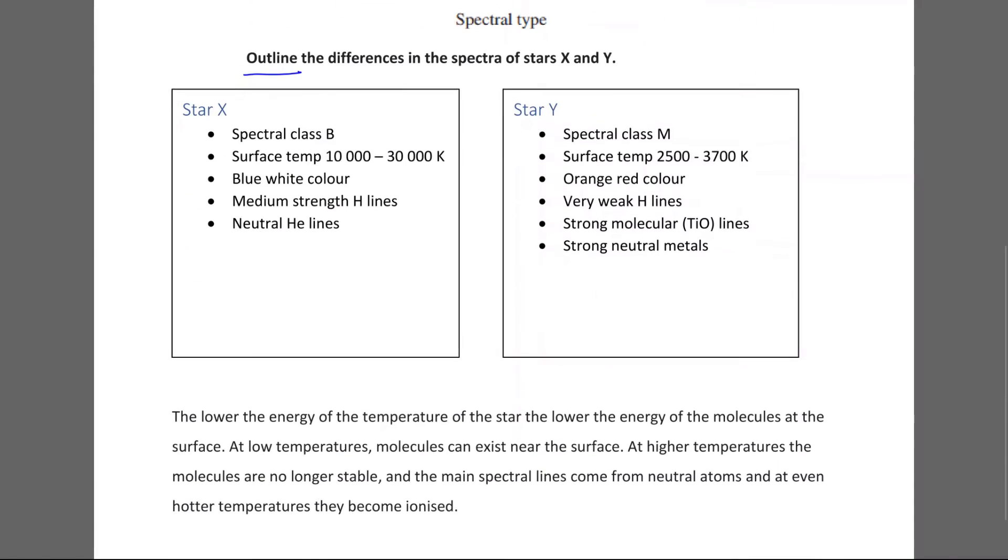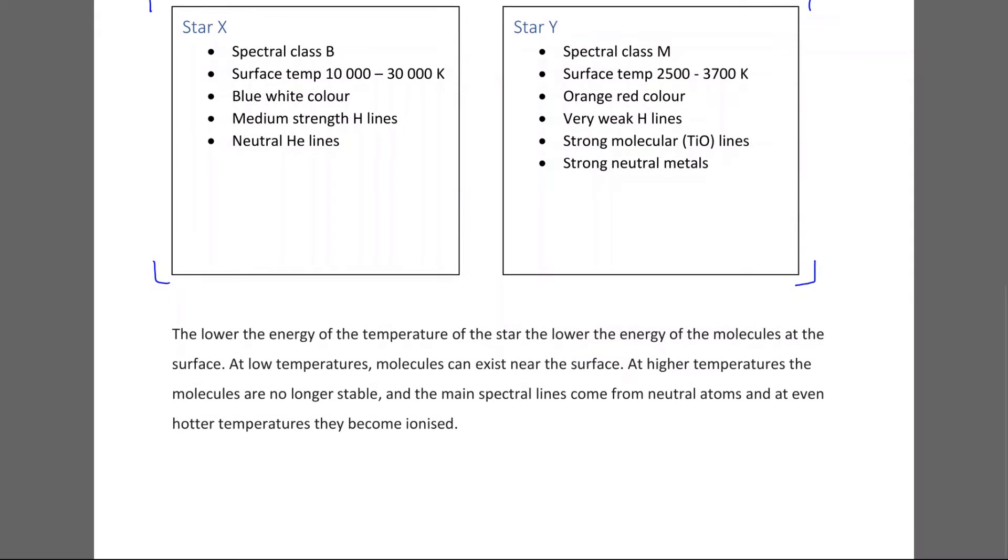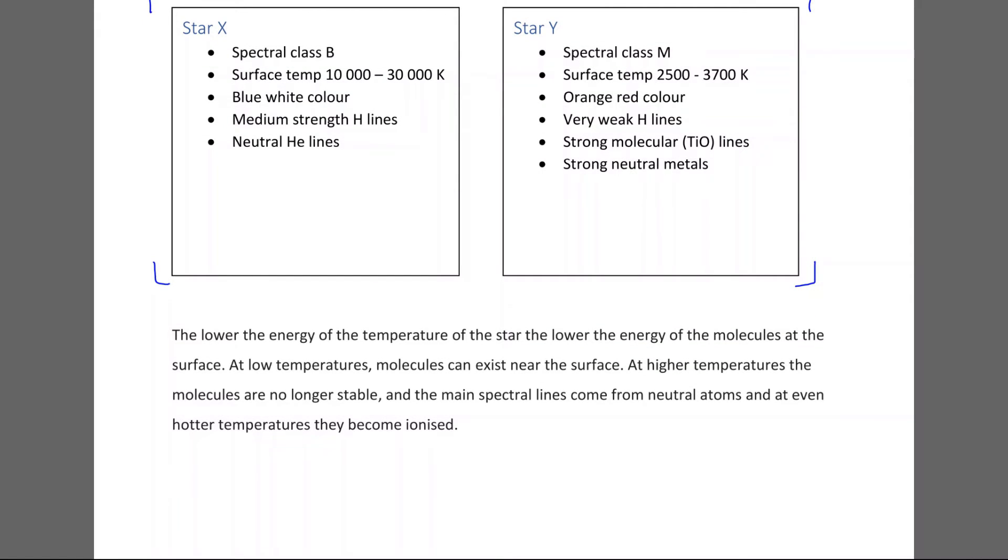Now, I've written a little thing underneath here. But however, this is enough to answer that question. Just those dot points there are enough to answer that question. But here's a bit of extra information for those who aren't too aware of how I arrived at my answer, or how we get to this other stuff about the medium strength hydrogen lines and the neutral helium lines. So, the lower the energy or the temperature of the star, the lower the energy of the molecules at the surface. At low temperatures, molecules can exist near the surface.